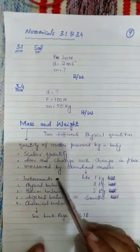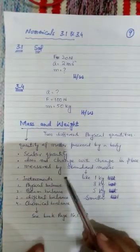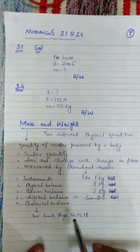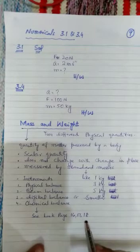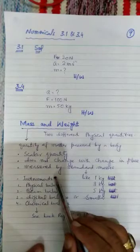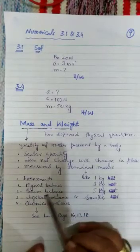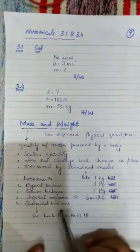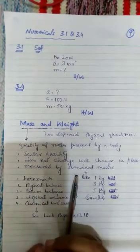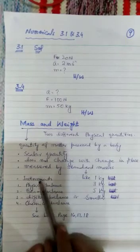In physics, mass of smaller and greater objects can be measured by different instruments. So in your book, page number 16, 17 and 18, chapter number 1, you can see different instruments which are used for measuring mass. One is physical balance, beam balance, digital balance, chemical balance. These are different balances which are used to measure different kinds of masses.